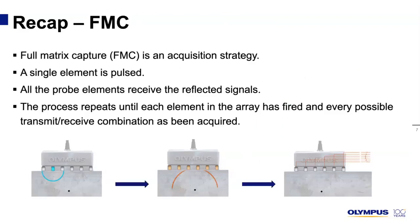FMC, or Full Matrix Capture, is an acquisition strategy. Basically, a single element is pulsed and all of the probe's elements receive the reflected signal. That's done for the first probe element and for the rest of them, and the process repeats until each element of the array has fired and all transmit-and-receive combinations have been acquired. That's what we call the FMC raw A-scans.